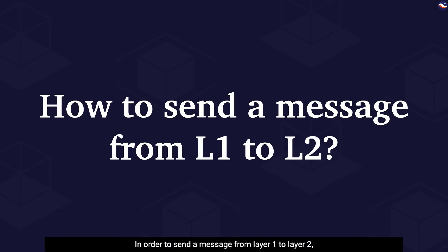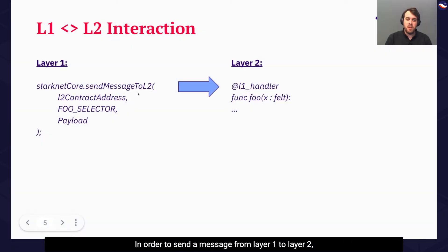In order to send a message from Layer 1 to Layer 2, we can use the send message to L2 method. As input, it receives the Layer 2 contract address, which we receive when we deploy the contract on Layer 2, a unique selector that is given to a function that allows us to know which function we are about to invoke, as well as the payload, which is simply the input to that function.